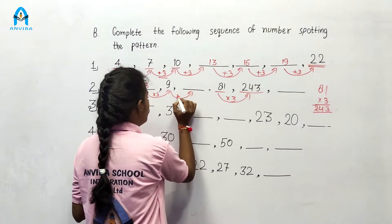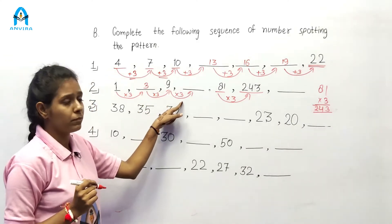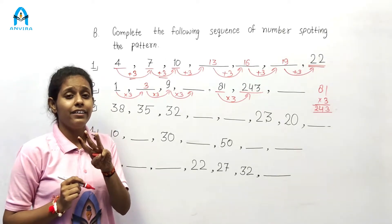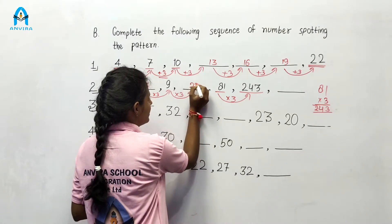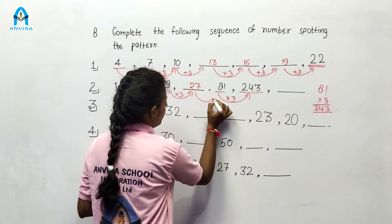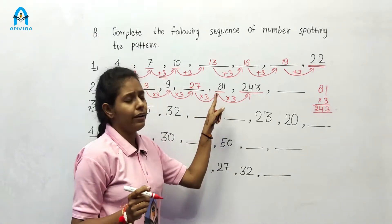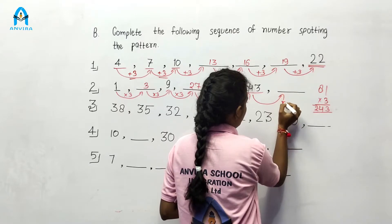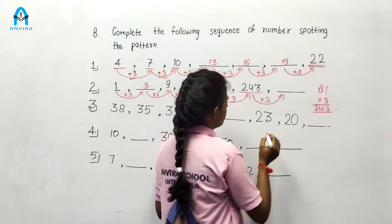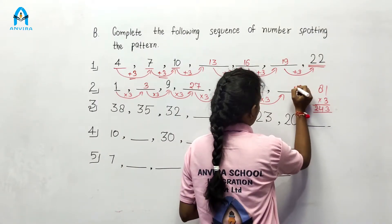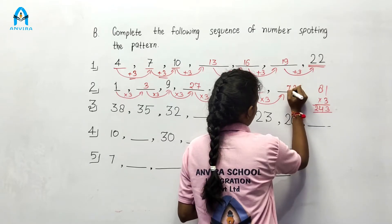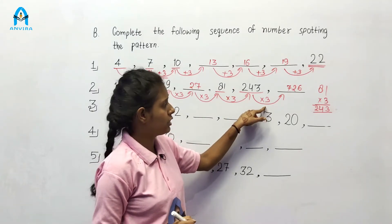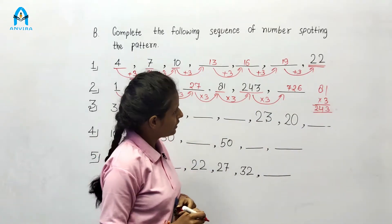We get each next number by multiplying by 3. So 9 times 3: 9 ones are 9, 9 twos are 18, 9 threes are 27. Then 27 multiplied by 3 gives 81. Then 243 multiplied by 3 gives 729. So the full sequence is 1, 3, 9, 27, 81, 243, 729.